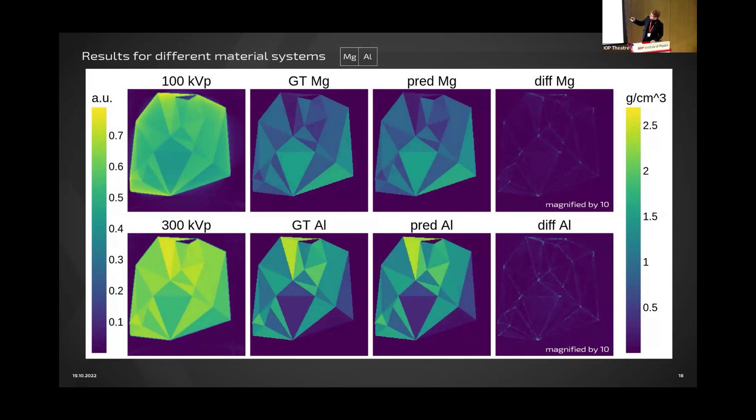On the third column there is the prediction by the model. On the very right side we have the difference. You see in the main areas, there's almost no error because it's very small. Problems occur at edges and at corners where a lot of these triangles meet. This should be some kind of problem with resolution. Also note this is magnified by 10, so the prediction seems to look pretty good.